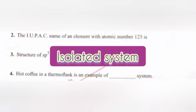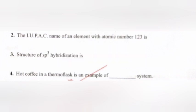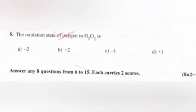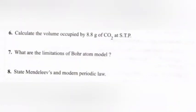Question 4: Hot coffee in a thermos flask is an example of what type of system? Answer: isolated system. Question 5: The oxidation state of oxygen in H2O2 is answer: minus 1.